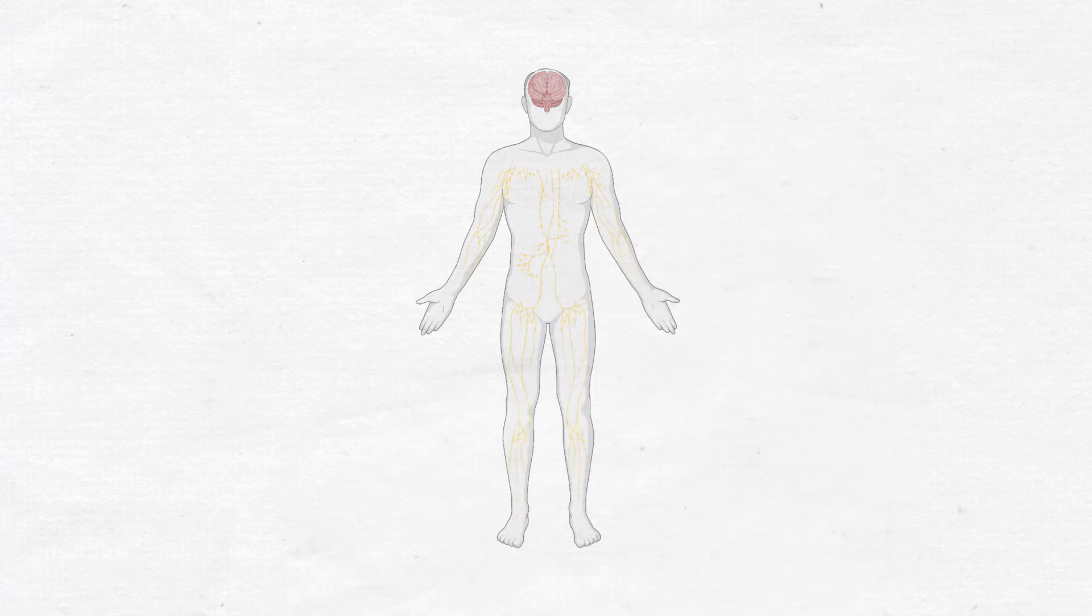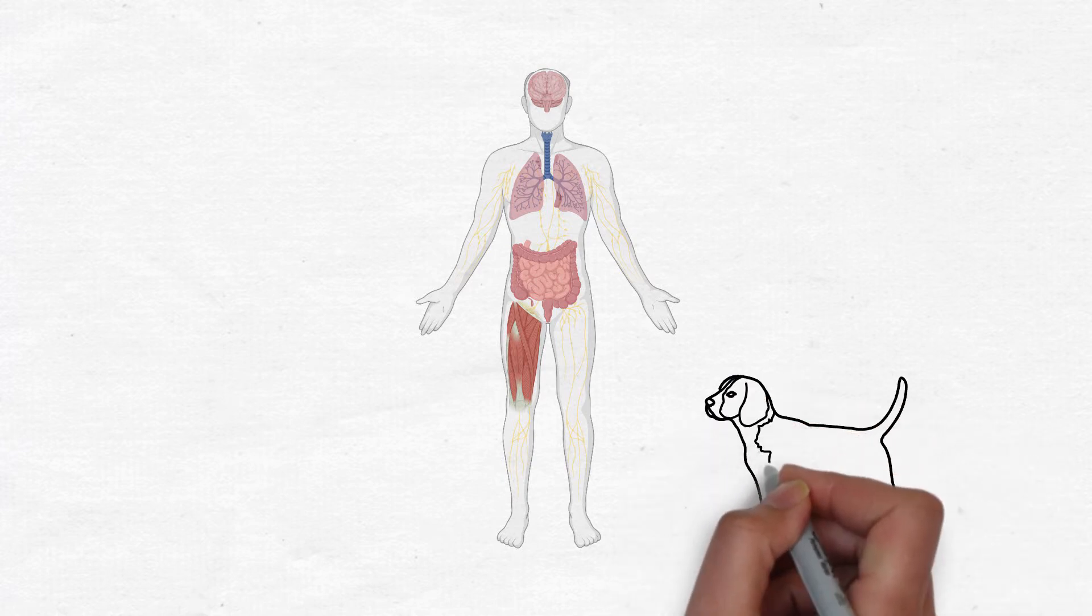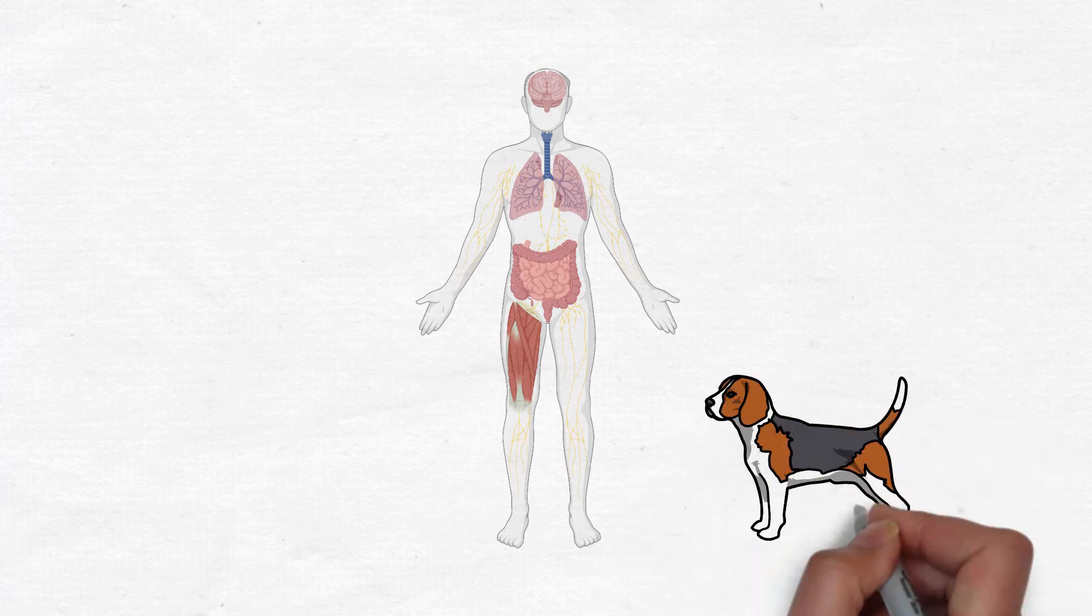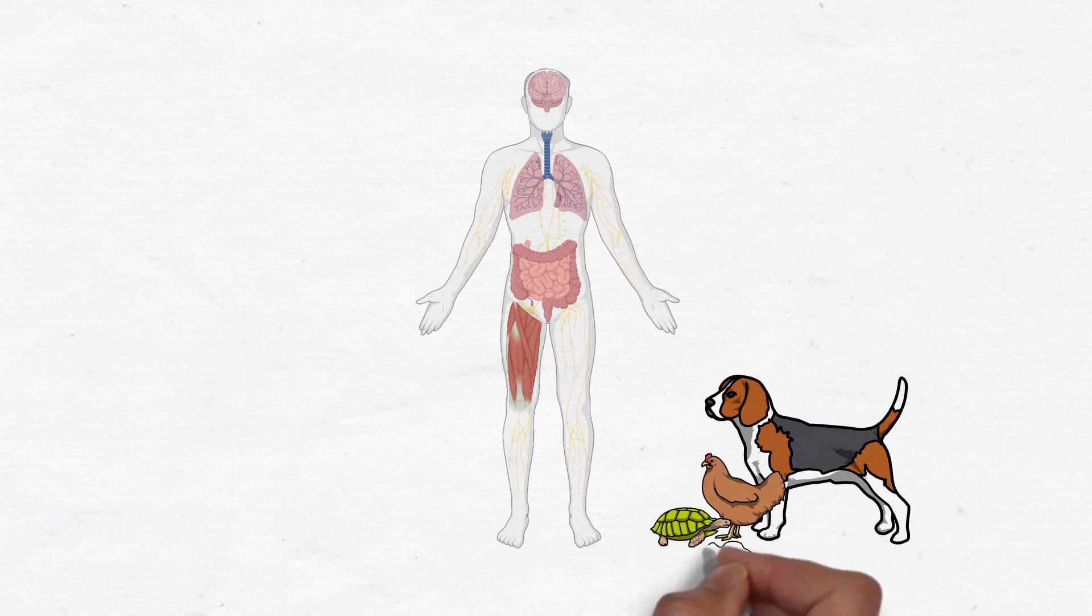The endocannabinoid system is mainly expressed in the brain, but today we know it is expressed throughout the entire body. Moreover, it is found not only in humans. In fact, all animals including vertebrates like mammals, birds, reptiles, and fishes, and also invertebrates have been found to have an endocannabinoid system.